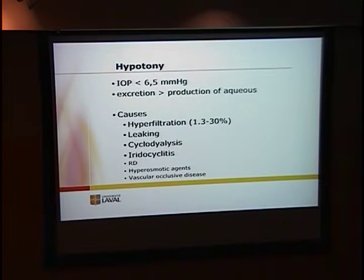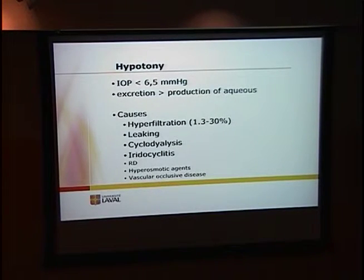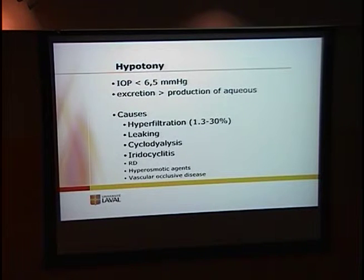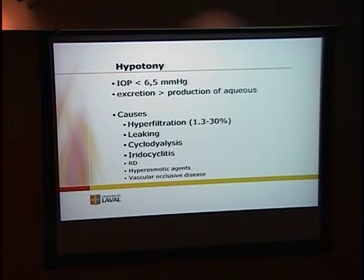Hypotony is described as a pressure under 6.5 mmHg — that's the statistical definition. The clinical definition would be under 4, because often the clinical decrease in vision and related findings will happen more frequently with a pressure around 4. Sometimes we can still see it between 4 and 6, but it is more frequently under 4.